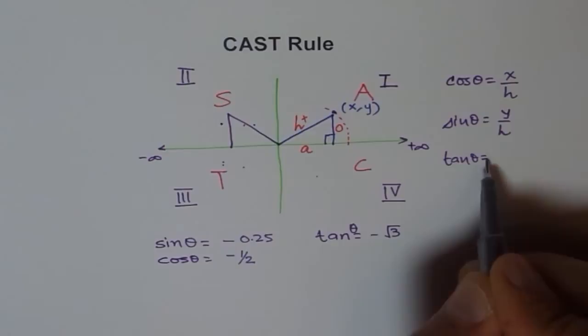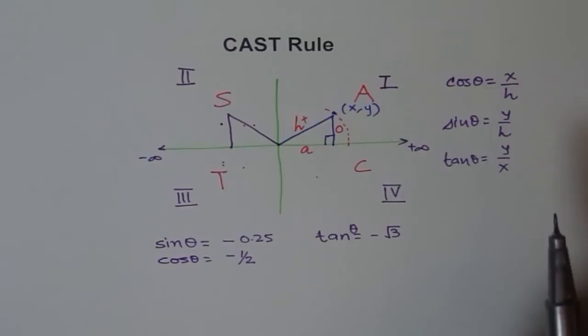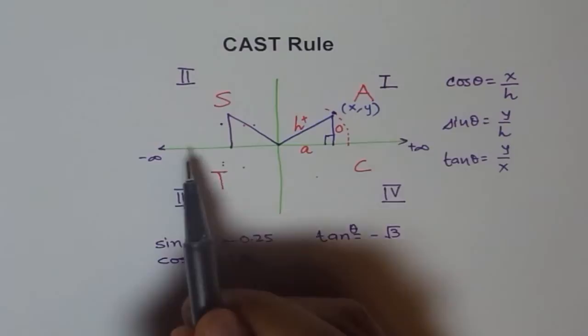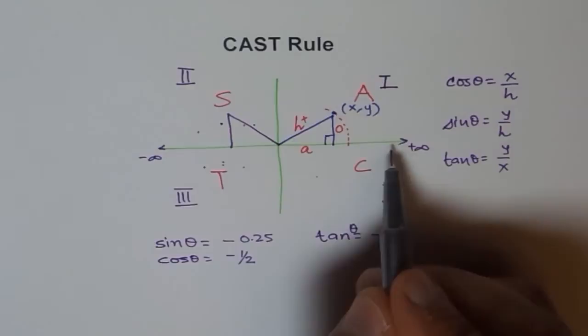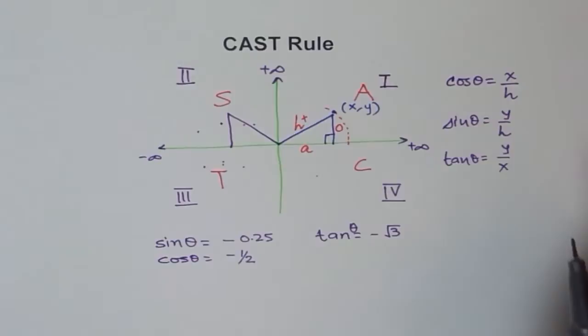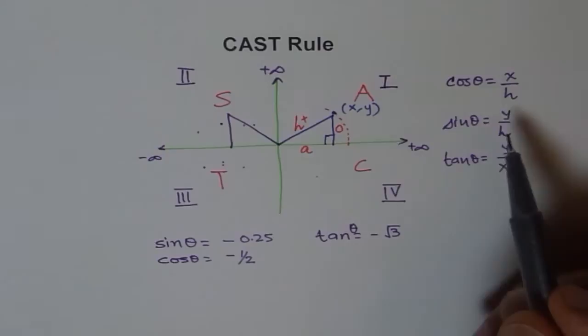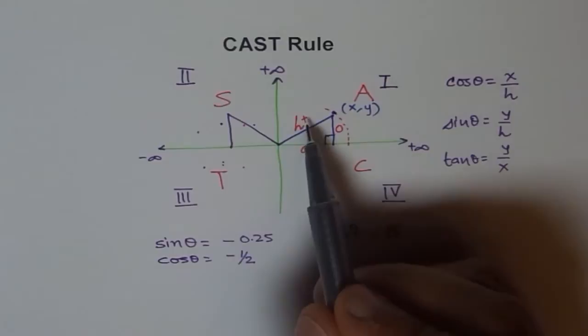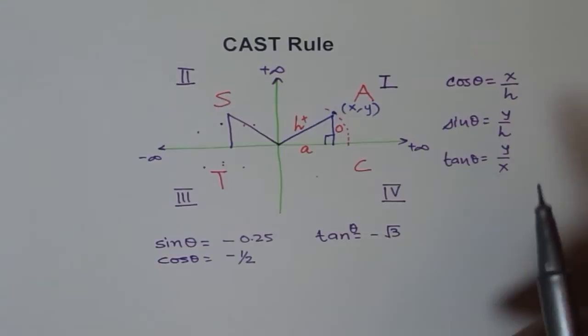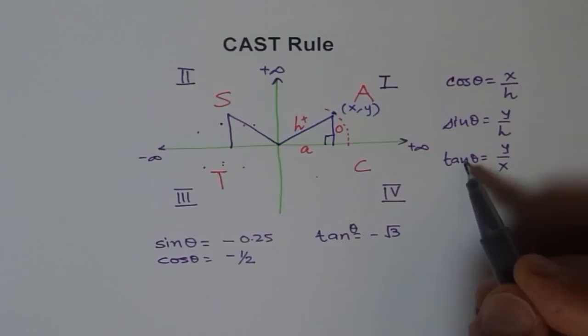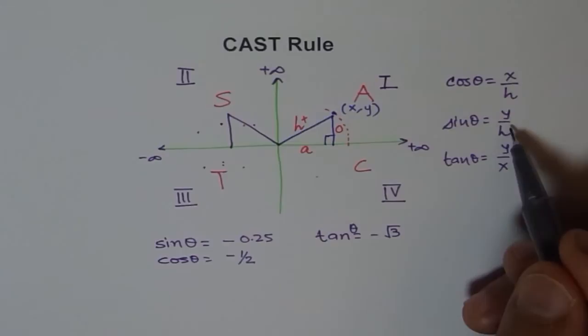Now, x is negative in quadrant 2 and quadrant 3. So cosine should be negative in both those quadrants. In quadrant 1, x and y are both positive, so sine, cosine, and tangent are all positive. As we move from quadrant 1 to 2, x becomes negative — cosine becomes negative and tangent becomes negative. Sine does not deal with x, so it remains positive. So in quadrant 2, only sine is positive.